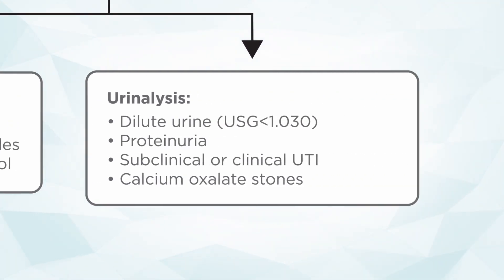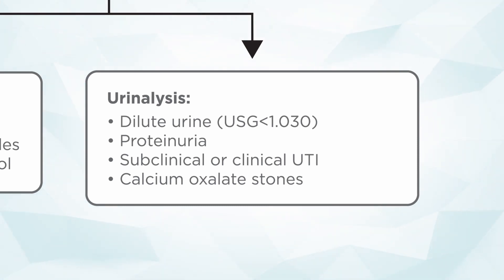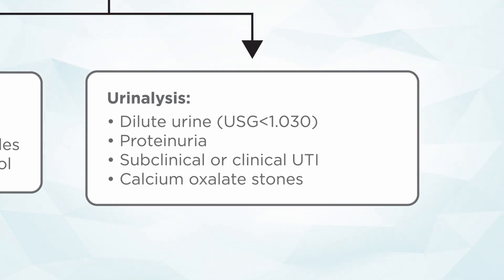On urinalysis, the dogs often cannot concentrate their urine, so the urine specific gravity is frequently less than 1.030. They may have proteinuria — usually not that high, usually in the plus one to plus two range on a dipstick. Very importantly, you need to do a thorough sediment exam to look for any signs of an active sediment indicating a subclinical or clinical urinary tract infection. Other findings can include calcium oxalate stones, since excess cortisol can cause a calciuresis.